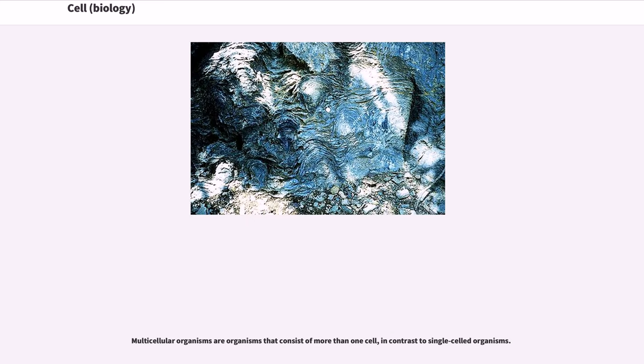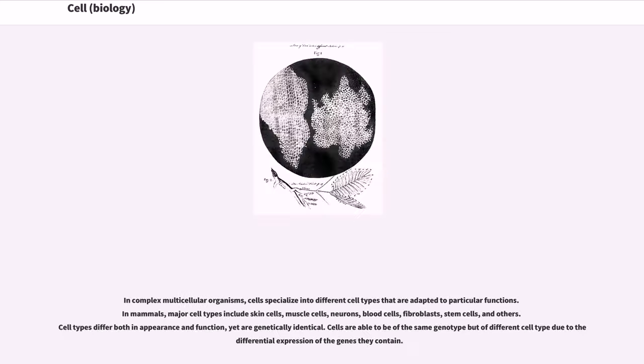Multicellular organisms are organisms that consist of more than one cell, in contrast to single-celled organisms. In complex multicellular organisms, cells specialize into different cell types that are adapted to particular functions.